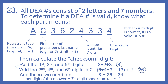All DEA numbers consist of two letters and seven numbers. To determine if a DEA number is valid, know what each part means. The first letter is the registrant type — this indicates if it's a physician, physician's assistant, hospital, clinic, or what type of registrant it is.